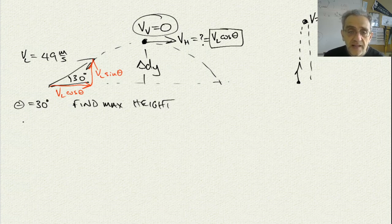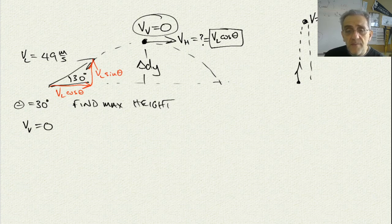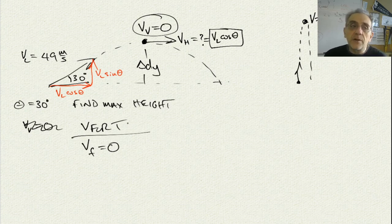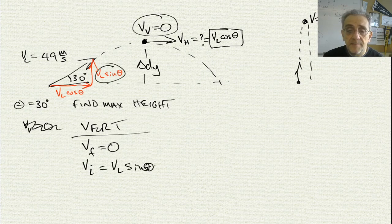So we know that V vertical equals zero. And perhaps instead of writing it like V vertical, why don't I just say vertical header, and now I can say V final equals zero. I think this makes it much more clear, because everything under this heading is now vertical. In addition, I also know the initial velocity, which is here, which is VL sine theta.